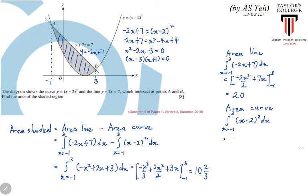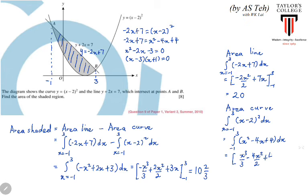The area under the curve is the integral from x = -1 to 3 of (x - 2)² dx. Expanding gives the integral of (x² - 4x + 4) dx, which evaluates to [x³/3 - 2x² + 4x] from -1 to 3, giving 9⅓. Subtracting the curve area from the line area: 20 - 9⅓ = 10⅔, confirming the same result.